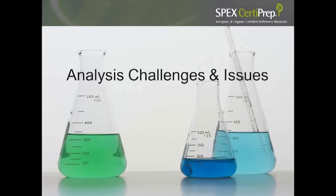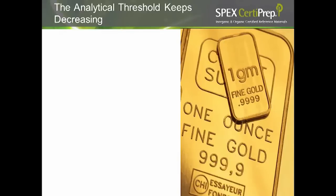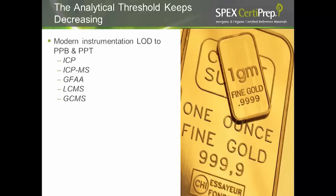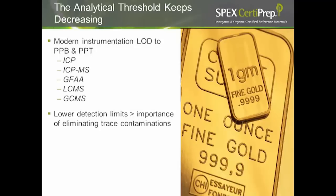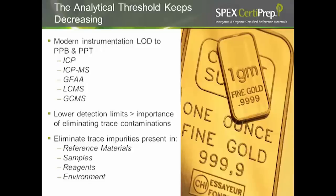Now we'll look at some analysis challenges and issues you might face in the lab when it comes to error and cleanliness. The biggest challenge is that our analytical threshold keeps decreasing. Modern instrumentation's level of detection has been dramatically reduced to the ppb or ppt ranges. Lower detection limits mean greater importance of eliminating trace contaminations — in reference materials, in your samples, in your reagents, and in your lab environment.